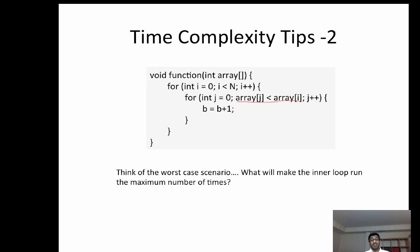So let's say the array is sorted in ascending order. How many times would the inner for loop run? Is that probably the worst case scenario? Is that probably the scenario in which the inner for loop will run maximum number of times?